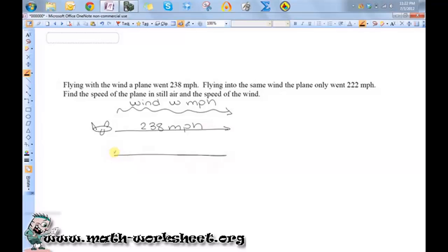When it's going against the wind, so let's draw another plane. This one looks even worse. It goes 222 miles per hour. So you can see that when it's going with the wind, it goes faster. And when it's going against the wind, it goes slower.